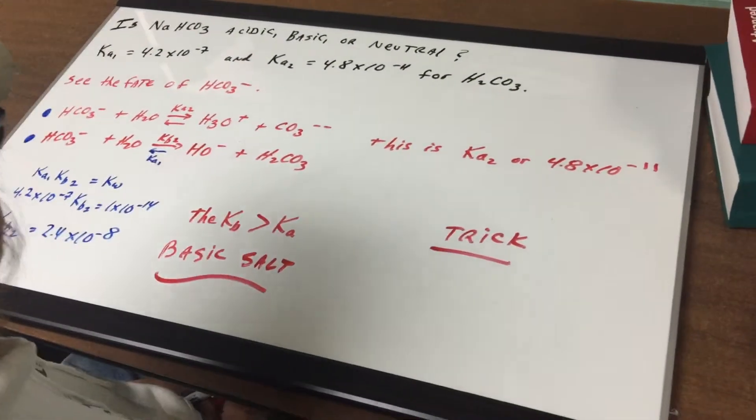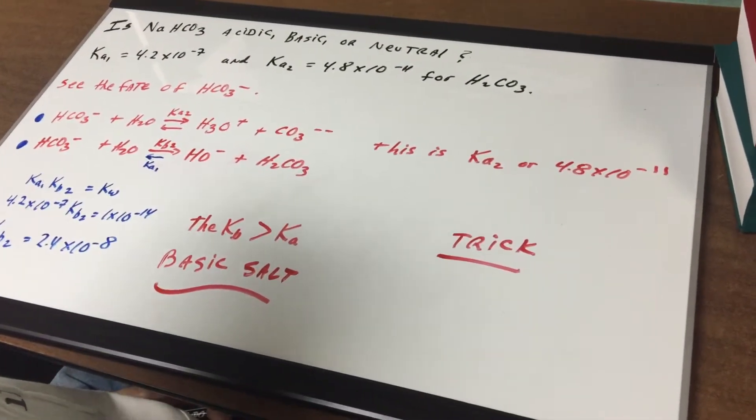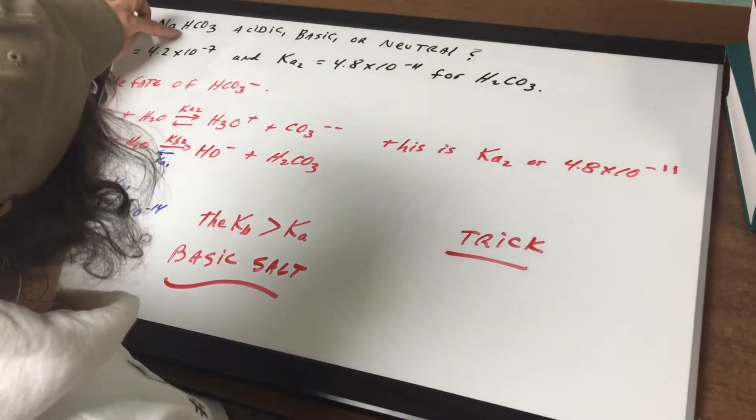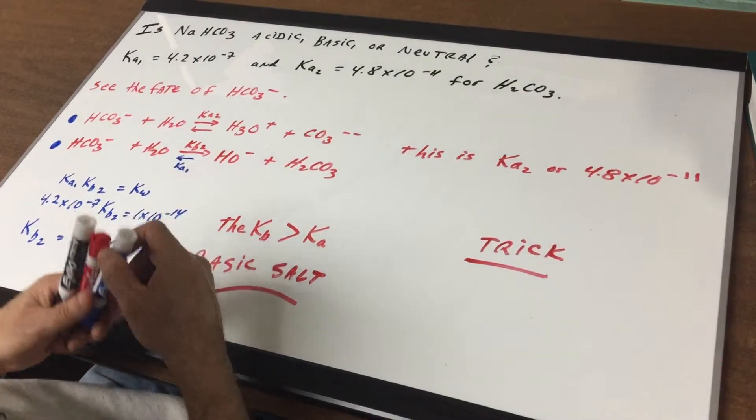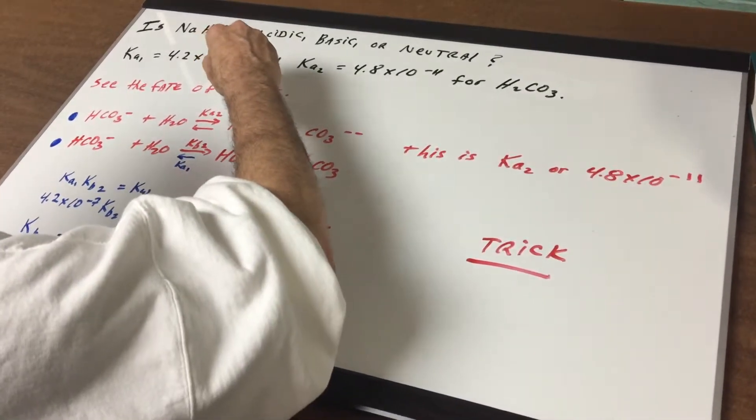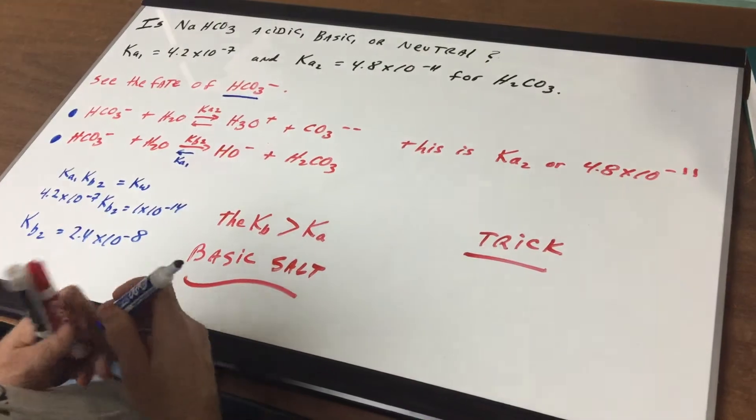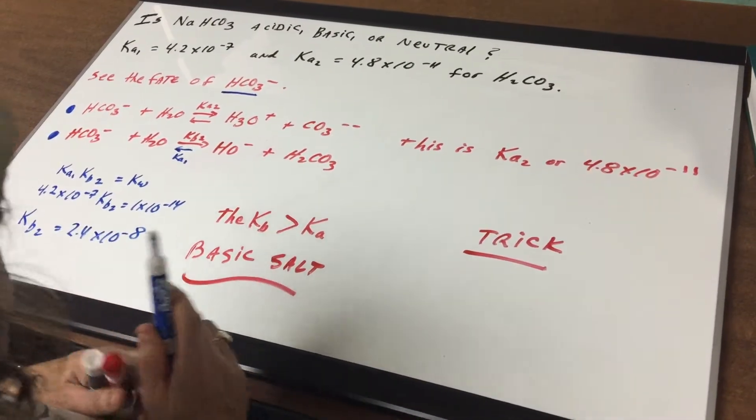Now the trick is if I want to know is this salt acidic, basic, or neutral, we're going to remove the spectator first. When we remove the spectator from sodium bicarbonate, we get the bicarbonate anion HCO3 minus.